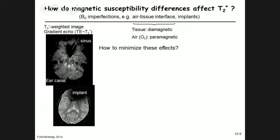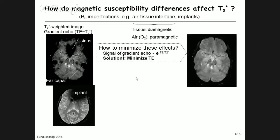We want diagnostically relevant images, so how can we minimize these effects? One approach is to reduce TE. Recall the gradient imperfection effect: ΔB × TE gives the phase accumulation. If one reduces TE, the time given to magnetization to go out of phase due to static field inhomogeneity is reduced. The signal is proportional to e^(−TE/T2*), so minimizing TE recovers signal intensity near the sinuses.